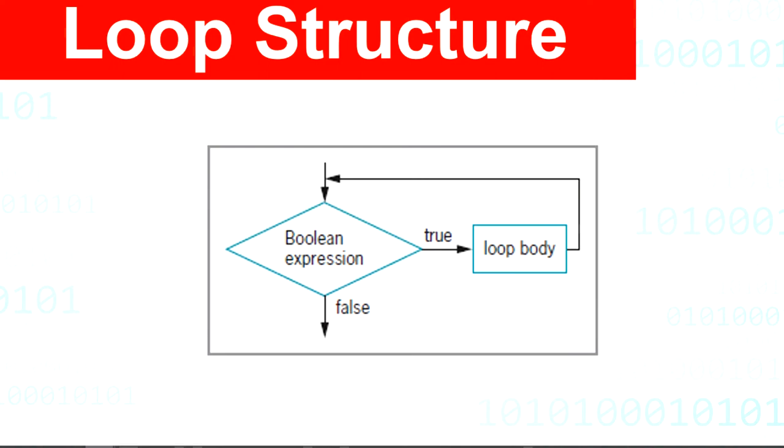A loop is a structure that allows repeated execution of a block of statements. Within a looping structure, a Boolean expression is evaluated. If it is true, a block of statements called the loop body executes and the Boolean expression is evaluated again. As long as the expression is true, the statements in the loop body continue to execute.